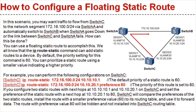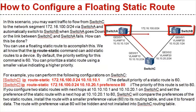So, what's the active-standby route scenario? In the same network, you may want traffic to flow from switch C to network segment 172.16.100.0/24 via switch A and automatically change to switch B when switch A goes down or the link between switch C and A fails. Of course! You can use a floating static route to accomplish this.